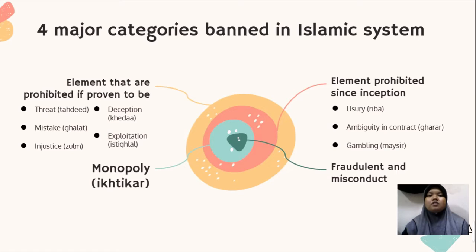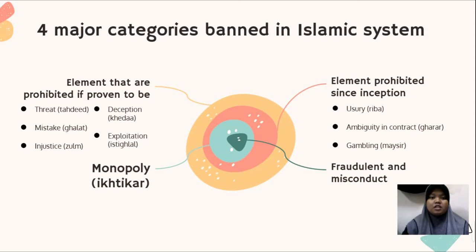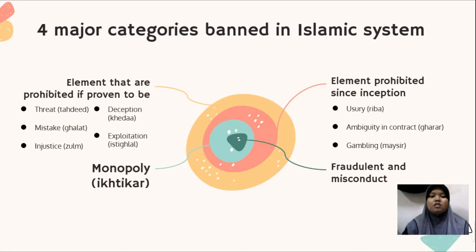There are four major categories of things prohibited in the Islamic system. The first is elements prohibited since inception, including usury (riba), ambiguity in contract (gharar), and gambling (maysir). The second is elements prohibited if proven, which include threat (tahdid), mistake (ghalat), injustice (zulm), deception (khida'), and exploitation (istighlal). The third major category is fraudulent conduct and misconduct. The fourth and last is monopoly (ihtikar).